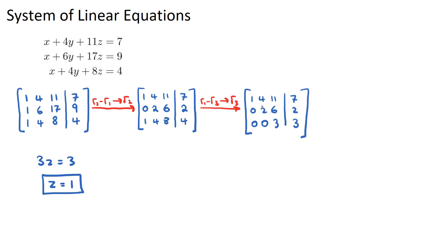Now we use the second equation. So 0x plus 2y. So 2y plus 6z should be equal to 2. Now we know z, so 2y plus 6 times 1 is equal to 2. So therefore, 2y is equal to negative 4. And y will be equal to negative 2.